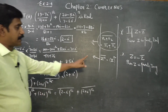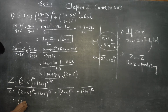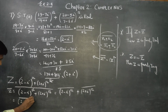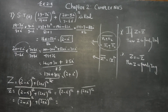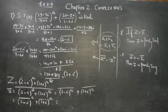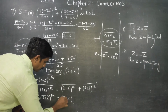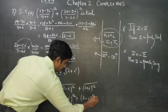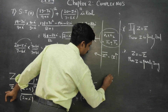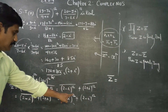Applying the power conjugate rule — conjugate of Z^n = (Z-conjugate)^n — we get (2 + i)^12 plus (2 - i)^12 for Z-conjugate. This is exactly Z again. Since Z-conjugate equals Z, Z is purely real.